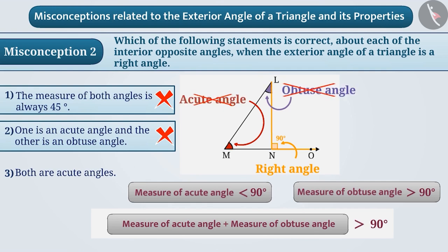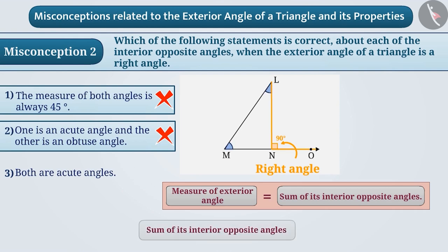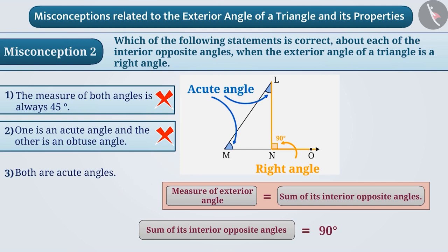The correct understanding is that the measure of the exterior angle of a triangle equals the sum of its interior opposite angles. Therefore, when the exterior angle is a right angle — that is, 90 degrees — the sum of the interior opposite angles must also be 90 degrees. This is possible only when both interior opposite angles are acute angles. Therefore, the correct answer is option 3.